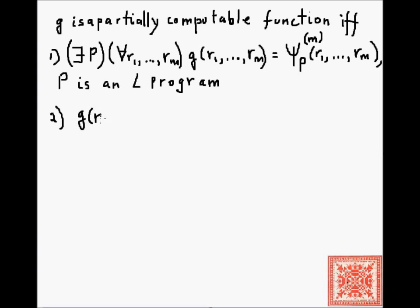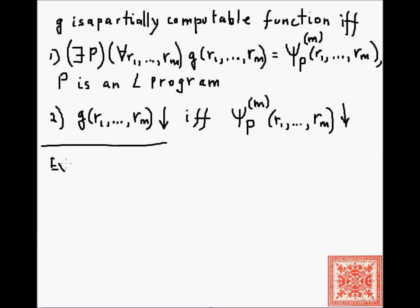Another implication of the definition: g of R1 through Rn is defined if and only if Psi of P, M, R1 through Rn is defined. What does that mean? The value of g on R1 through Rn, that M-tuple, is defined if and only if program P terminates and the y variable contains the same value, the value of g on those values R1 through Rn.